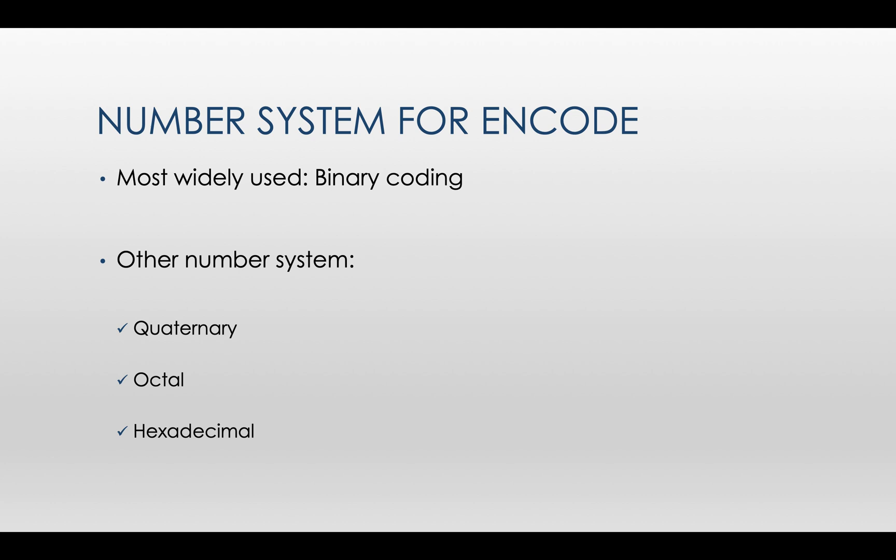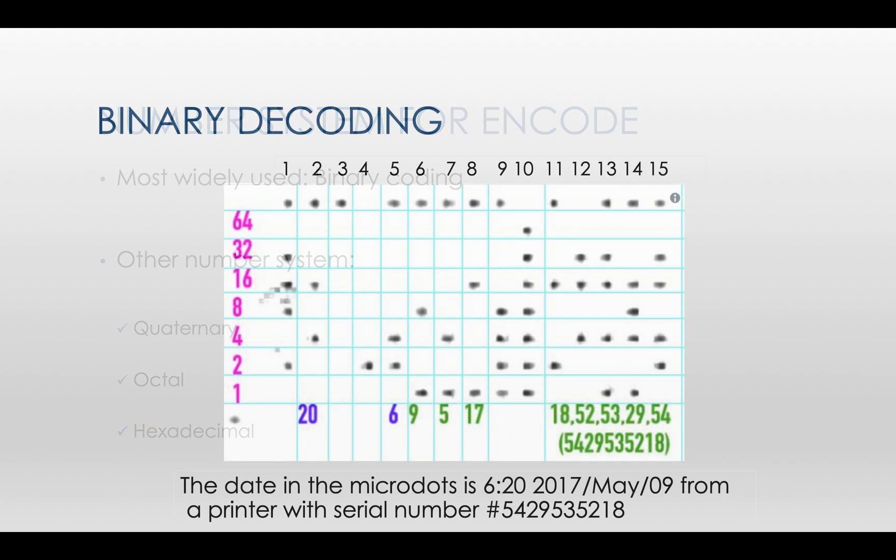The most widely used number system for yellow dots is binary coding, but there are still other number systems such as quaternary or hexadecimal used in machine identification code. Now I'll present to you a decode process of binary decoding of these yellow dots.